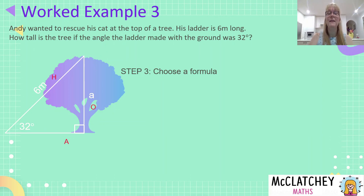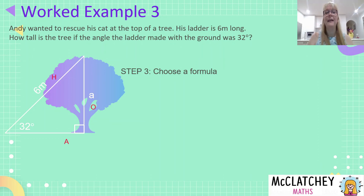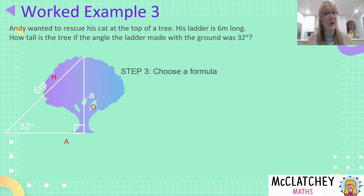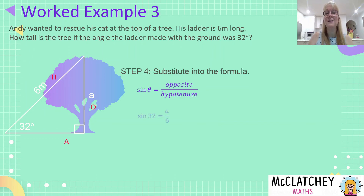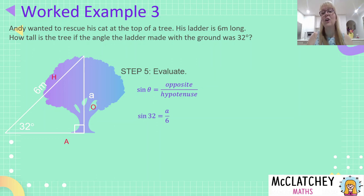Now label the triangle. The hypotenuse is the ladder at six meters. Using 32 degrees as our reference, the opposite side is the height of the tree — labeled a — and the adjacent is the ground. Be careful: the variable a here is the opposite side, not the adjacent. We have O and H, so we choose the sine formula. Substituting: a divided by 6 equals sine 32. Multiply both sides by 6 to get a = 6 sin 32.